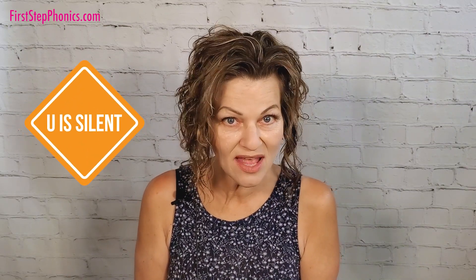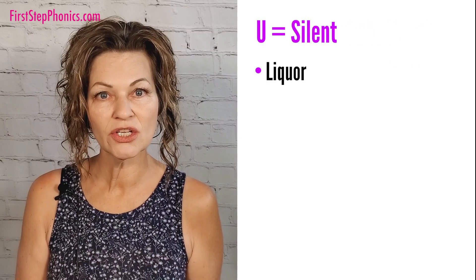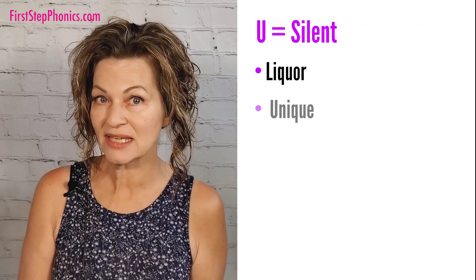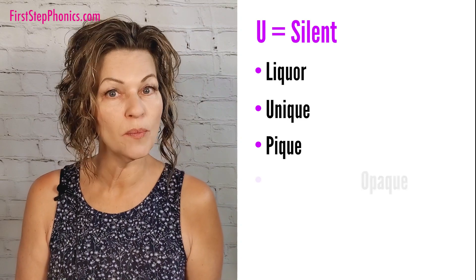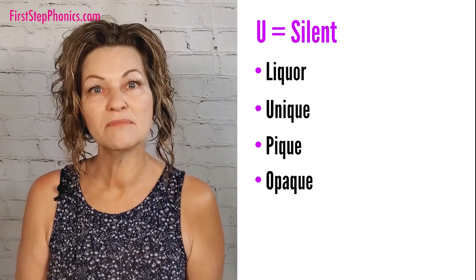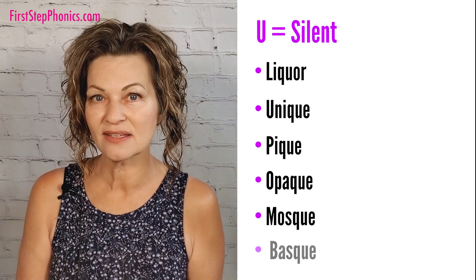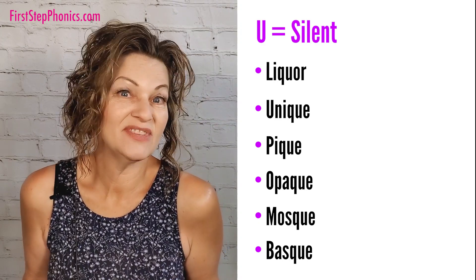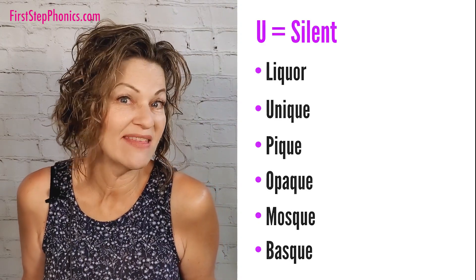Now let's look at some words where Q and U are together, but the U does not make a W sound — it's silent. The Q, as always, is just K, but no W sound with it. Here are some words: liquor, unique, clique, opaque, mosque, bisque. The Q is just K there.